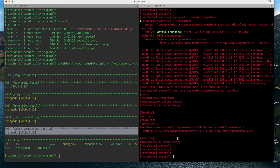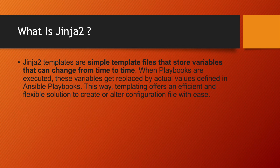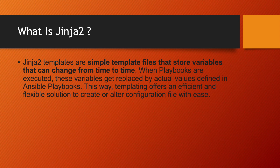What exactly is Jinja2? Jinja2 templates are simple template files that store variables that can be changed from time to time. When playbooks are executed, these variables get replaced by actual values defined in Ansible playbooks. This way, templating offers an efficient and flexible solution to create or alter configuration files with ease. Whenever we use a template with Jinja2 templating, we use the .j2 extension and the actual values are replaced when it is copied to the target system.